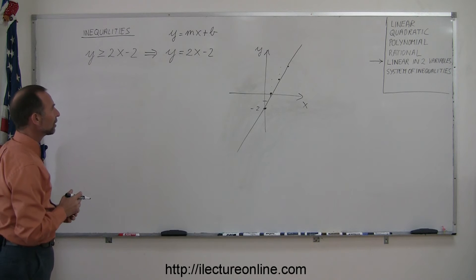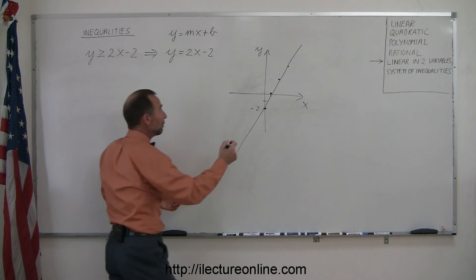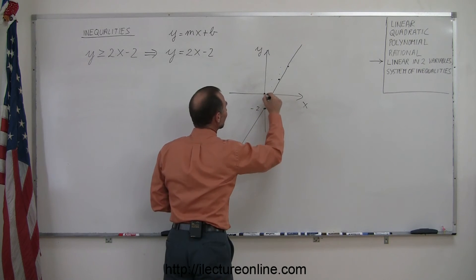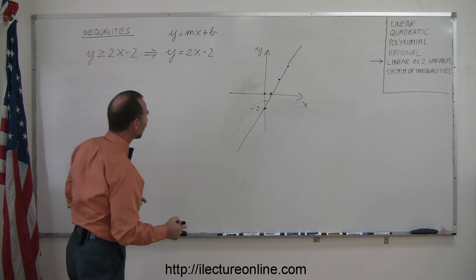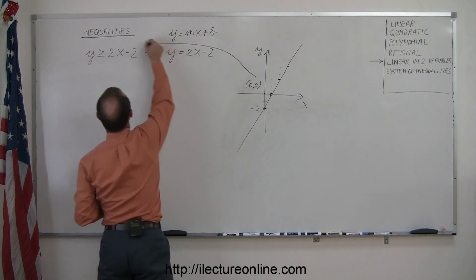Now, to find the region that does satisfy the inequality, we're going to try a test point. Pick any point on either side of the line. I always like to use the point (0,0). That makes it easy to plug in that value. So plug in the point (0,0) into your inequality.